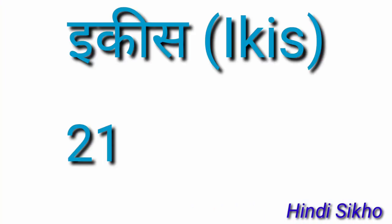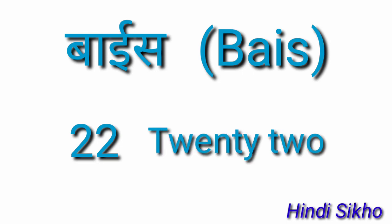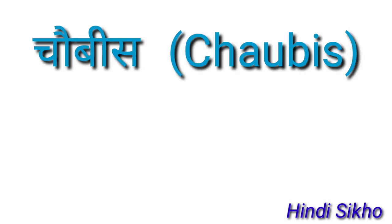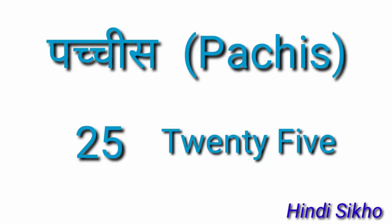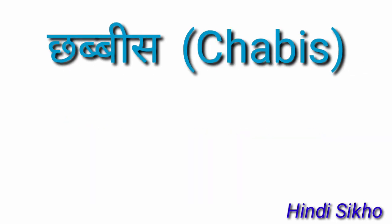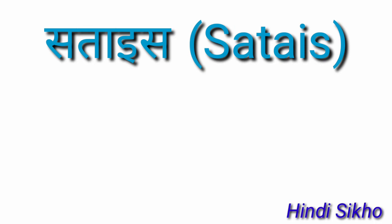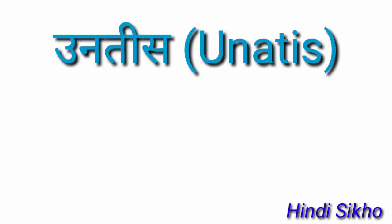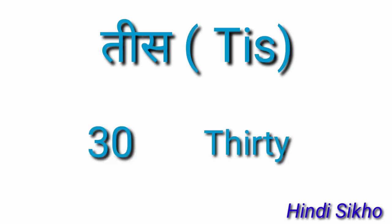1 is 21, 2 is 22, 3 is 23, 4 is 24, 5 is 25, 6 is 26, 7 is 27, 8 is 28, 9 is 29, and this is 30.